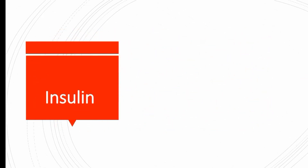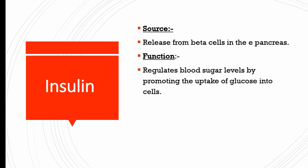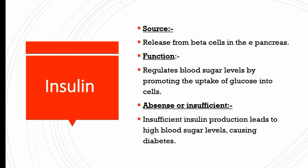Our first hormone is insulin. Insulin is released from the beta cells of the pancreas. Its function is that it regulates blood sugar level by promoting the uptake of glucose into cells. Insufficient insulin production leads to high blood sugar level, causing diabetes. Those people who have diabetes have a low level of insulin.